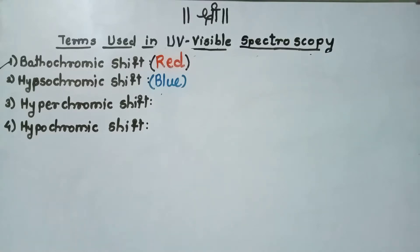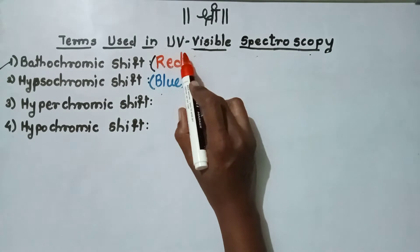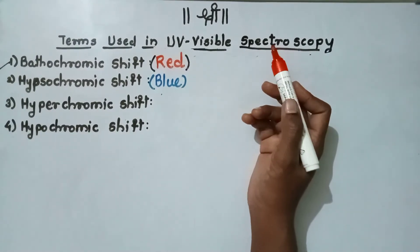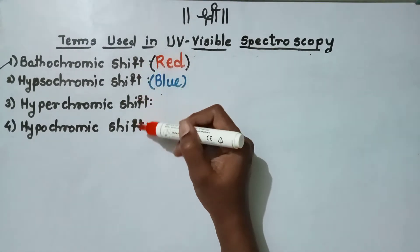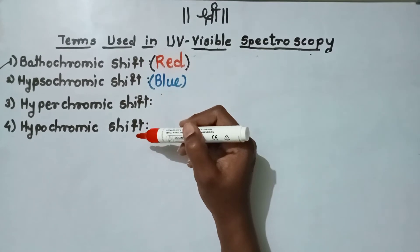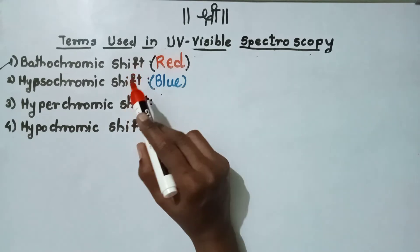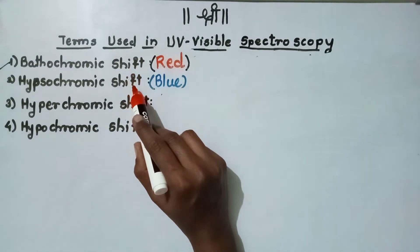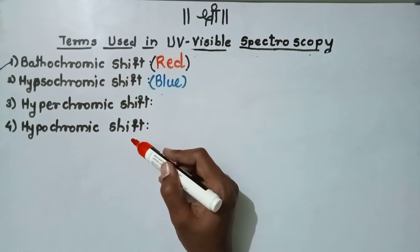Hello students, in this video we will see terms used in UV visible spectroscopy. Here are four terms used to show the shift in spectrum: the bathochromic shift, hypsochromic shift, hyperchromic shift, as well as hypochromic shift.